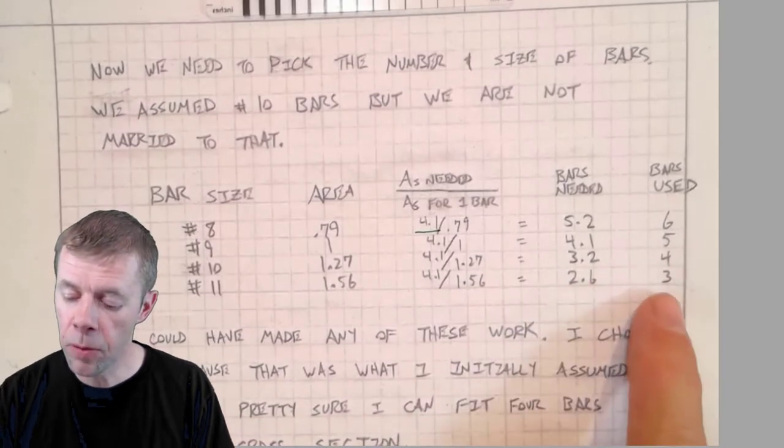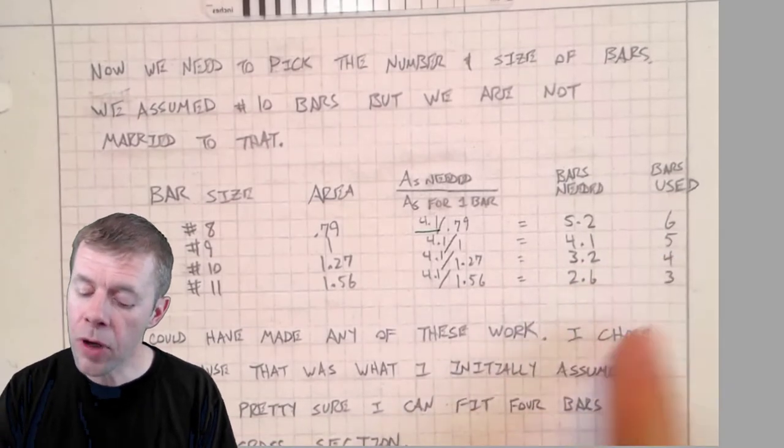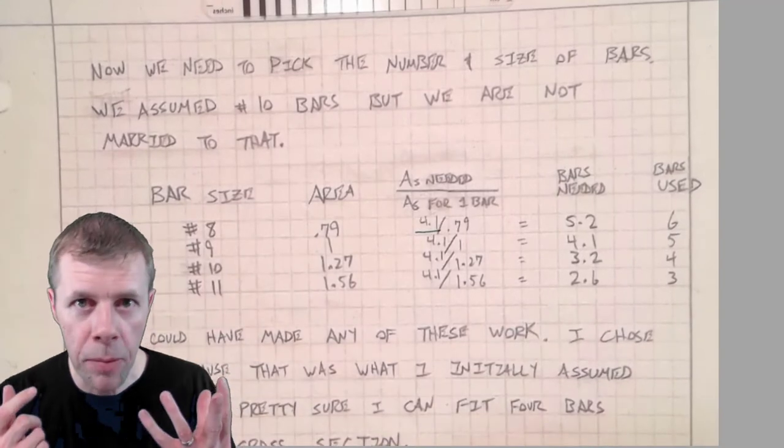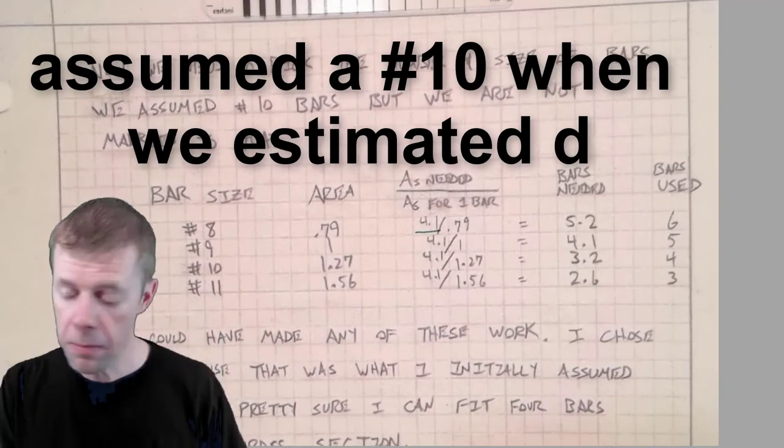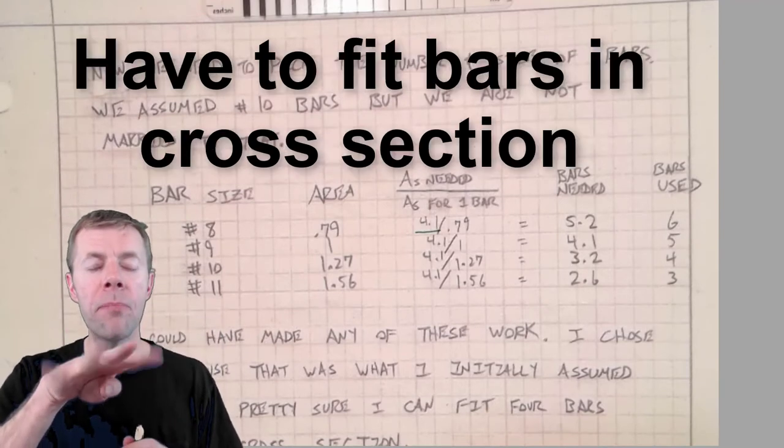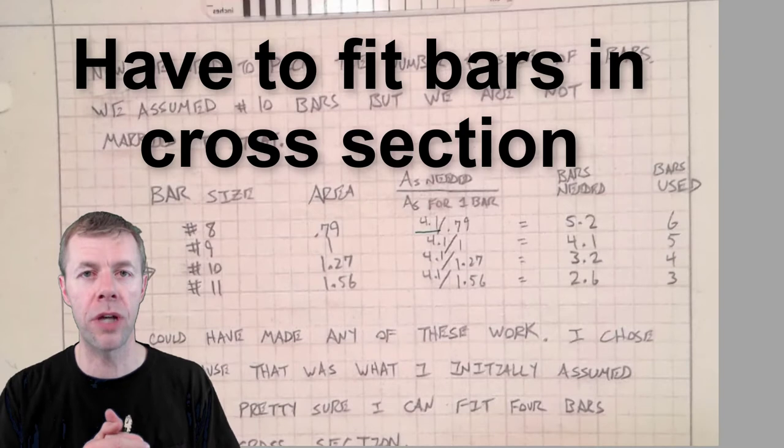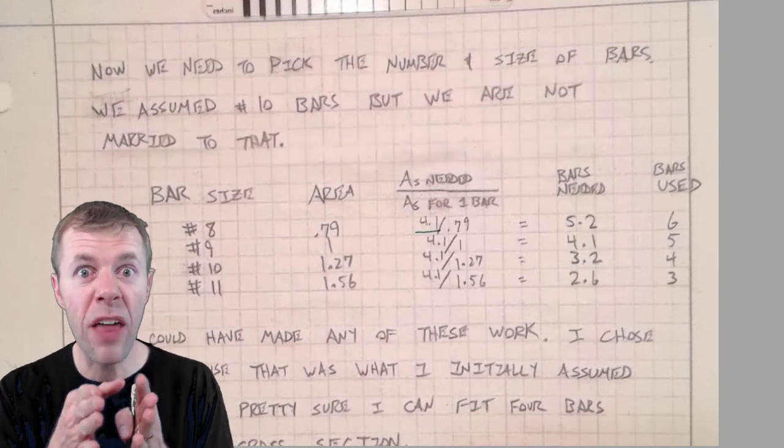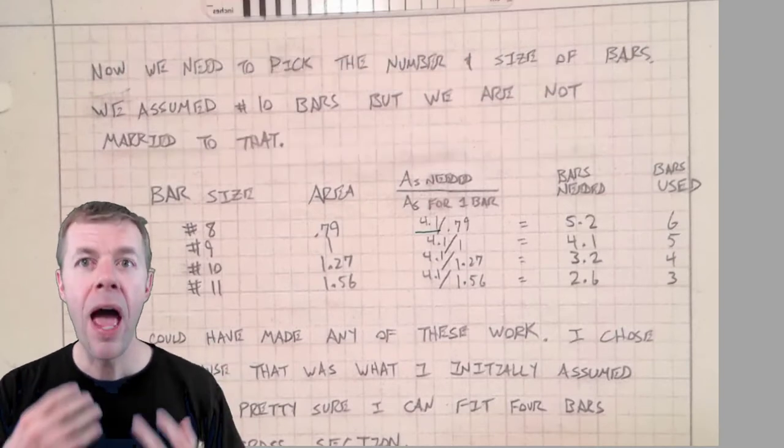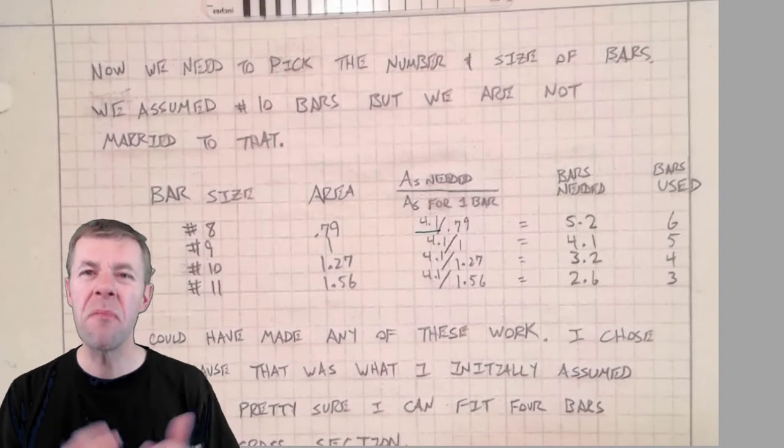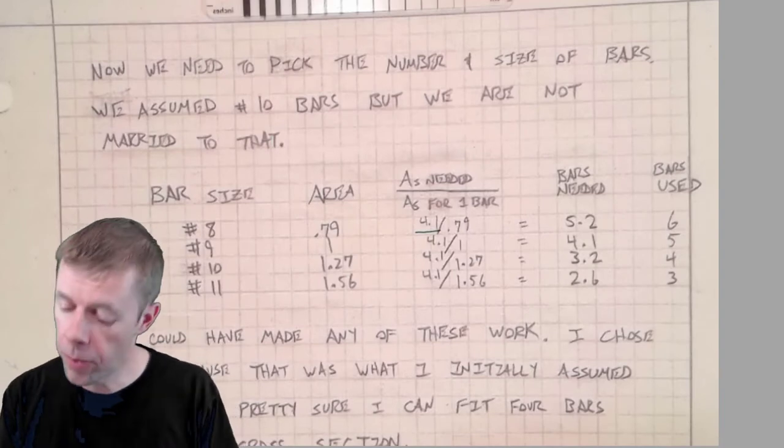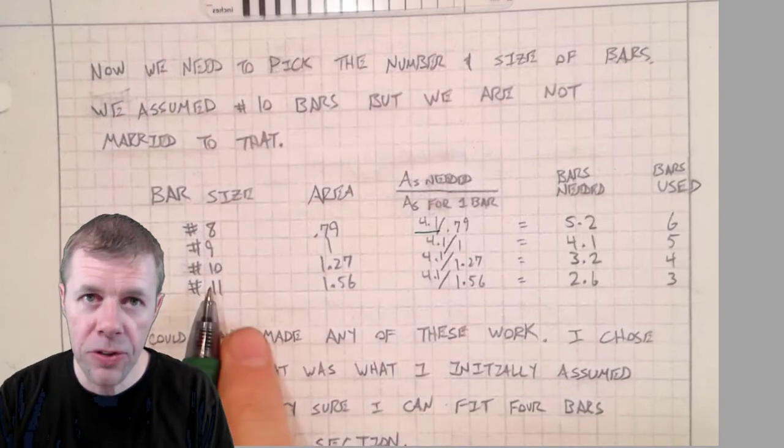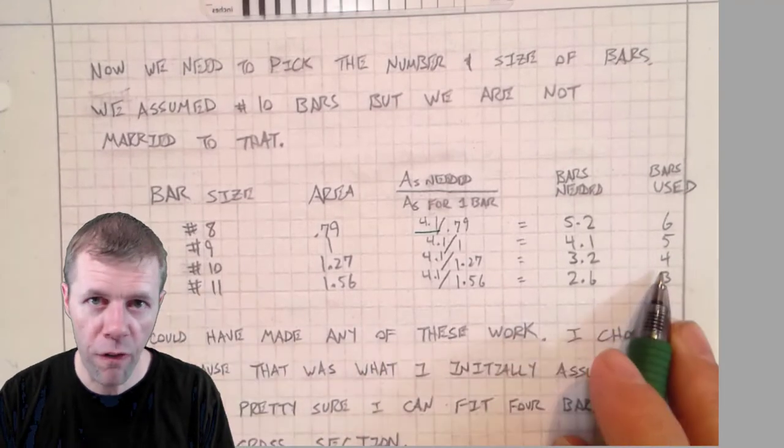So these are number of bars I could use. I'm gonna pick a number 10. Why? Number one, I already assumed that to begin with. And number two, I got to think about how many bars can I fit across my cross-section. Four is a good number, so I'm gonna try a number 10 with four bars, and now we're gonna check our assumptions.